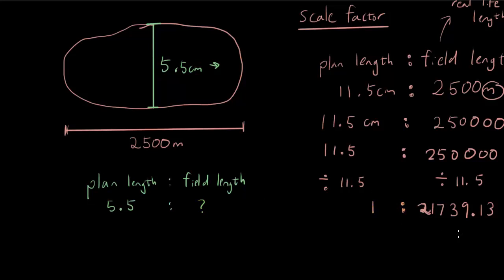Well, if you guys remember what the scale factor was, one unit on the plan is 21,739.13 in real life. That's what the scale factor is. One unit, so however long one unit is on your map, it's 21,000 something units in real life. So if I want to know the field length of this width of the lake, I just simply multiply 5.5 by 21739.